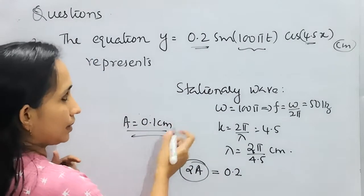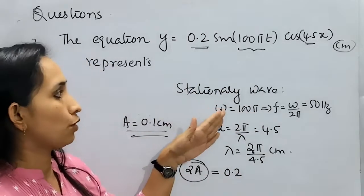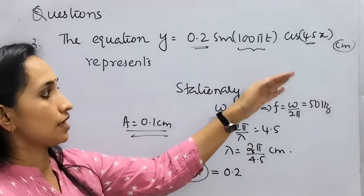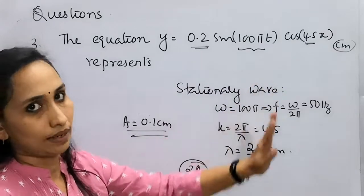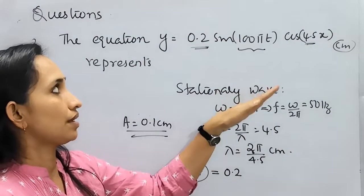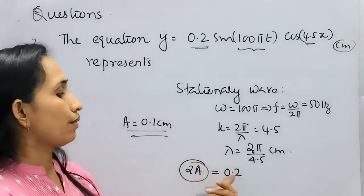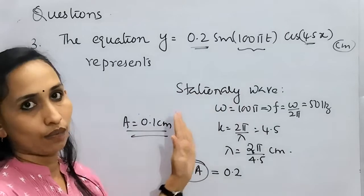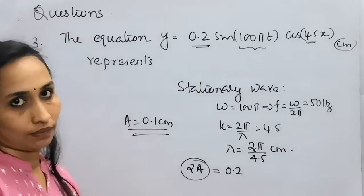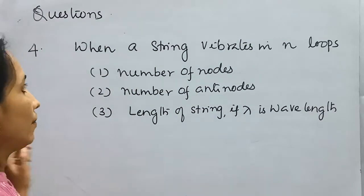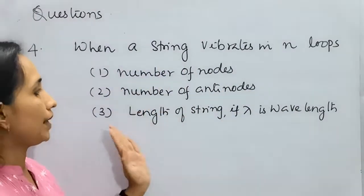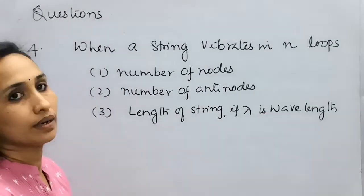These parameters may be asked in different versions — options could include: it is a stationary wave of frequency 50 Hz; time period 0.02 seconds; wavelength 2π/4.5; or amplitude of each component wave 0.1 cm. Now the fourth question: when a string vibrates in n loops, find the number of nodes, number of anti-nodes, and length of the string if λ is the wavelength.